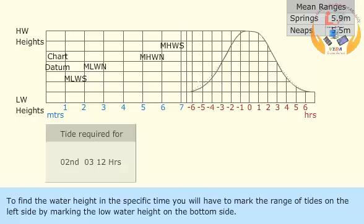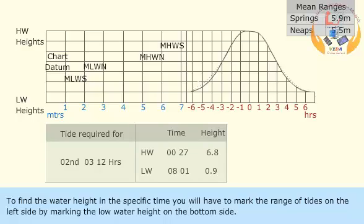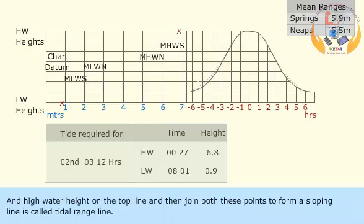To find the water height at a specific time, you will have to mark the range of tides on the left side by marking the low water height on the bottom side and high water height on the top line. Then join both these points to form a sloping line called the tidal range line.